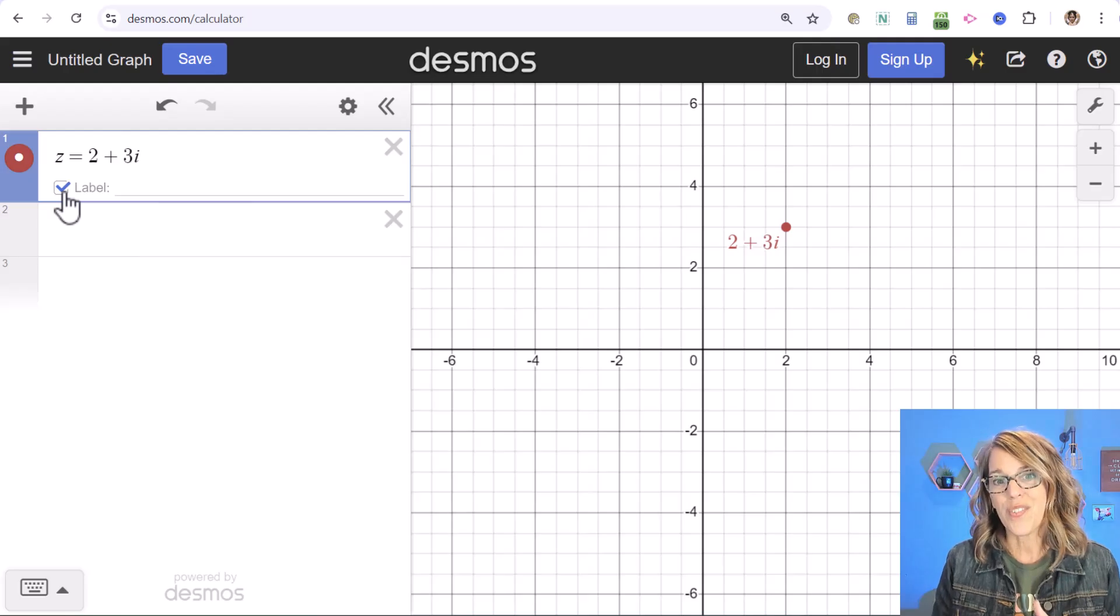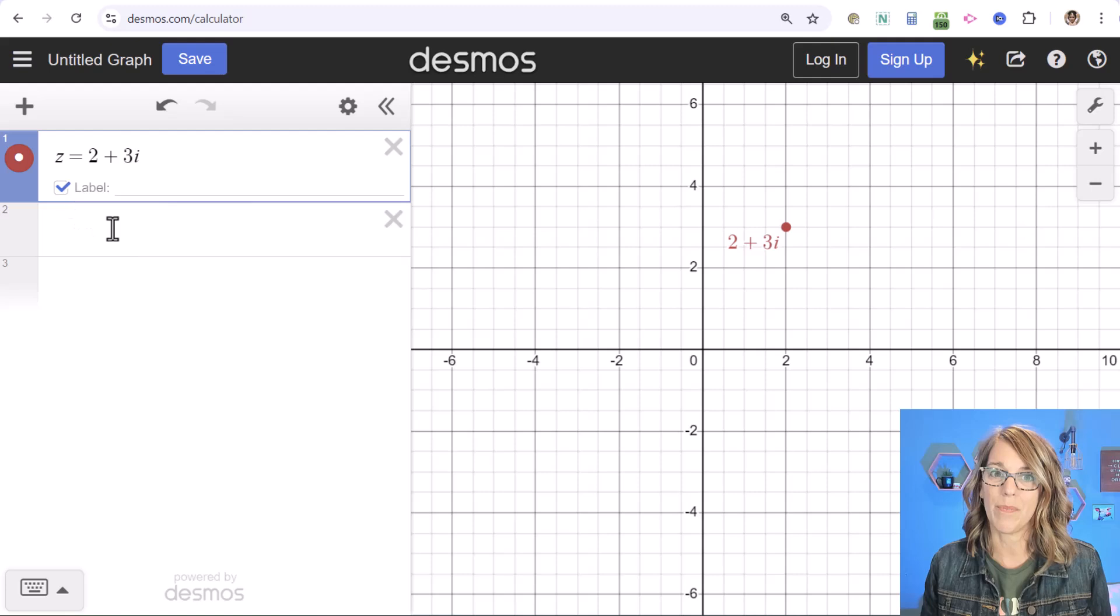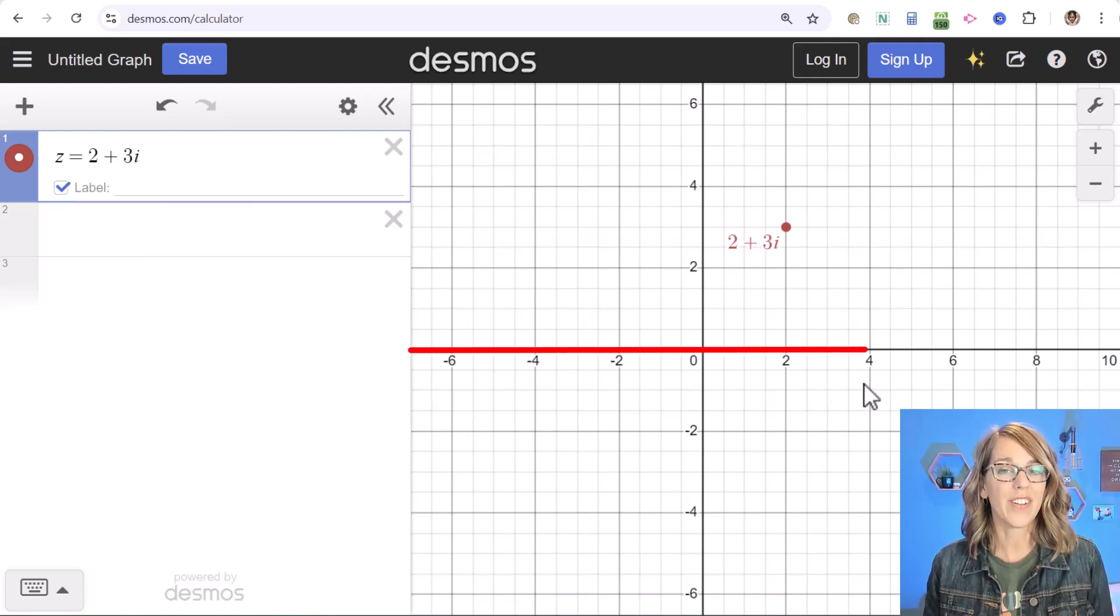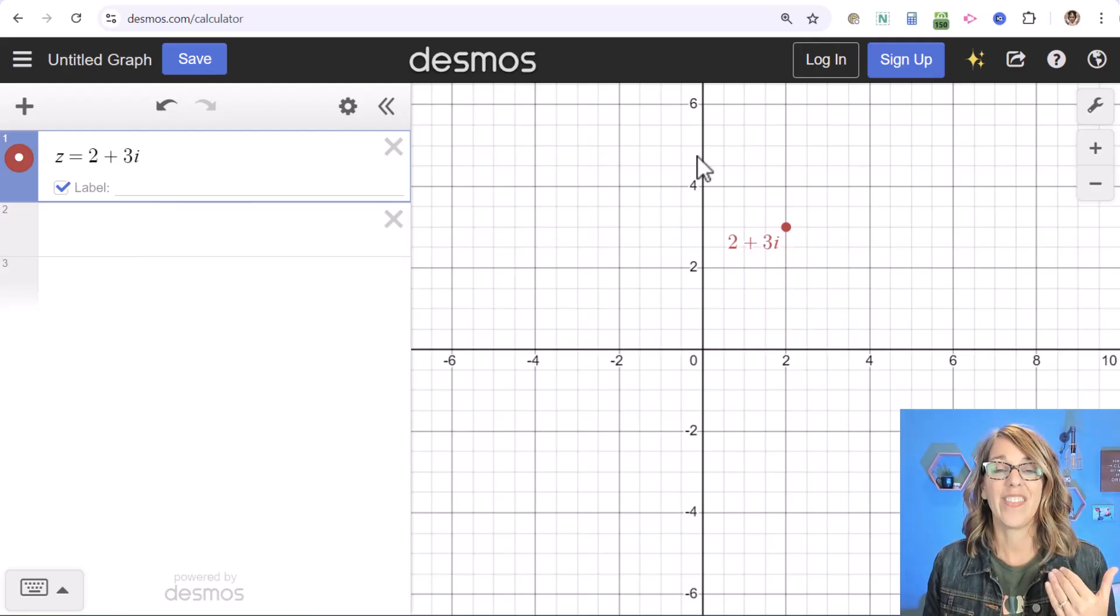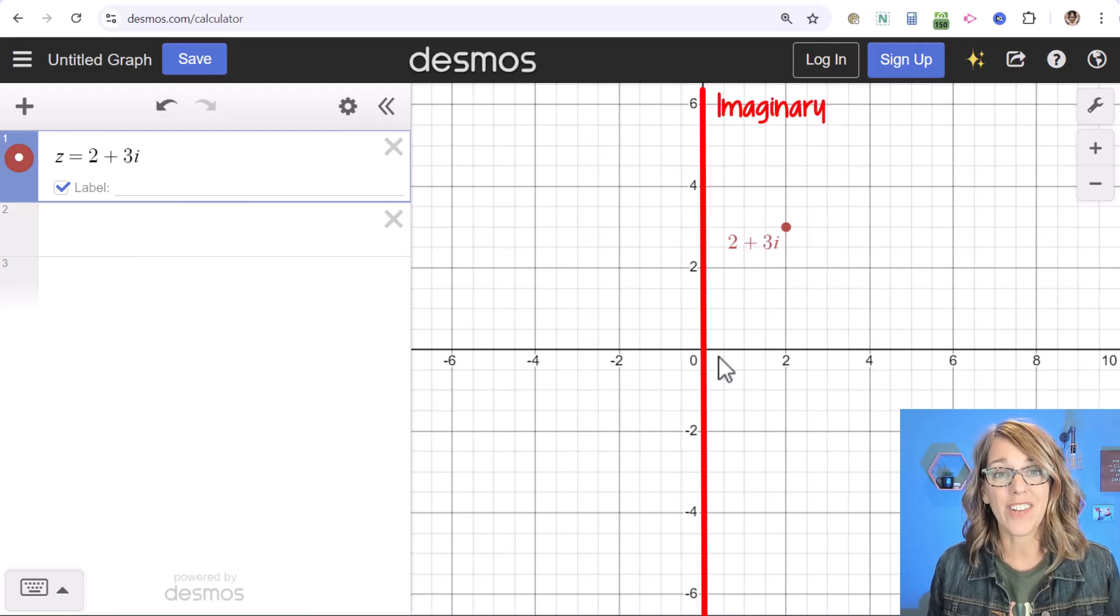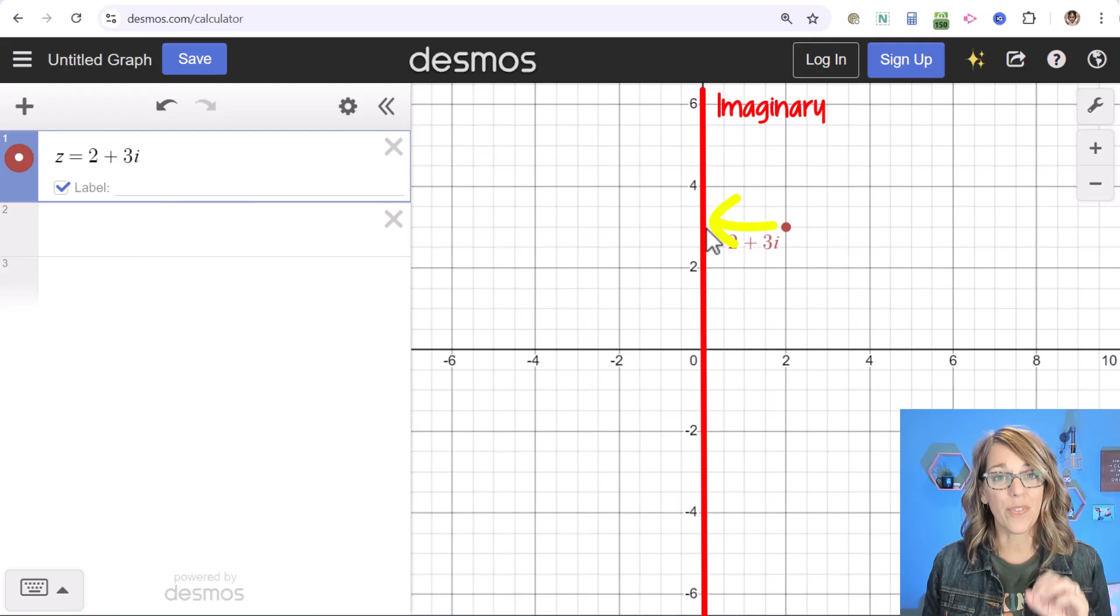Because I want to show you that what I'm looking at is this number graphed in the complex plane. My horizontal axis is now the real axis, so my point lines up with 2 which is the real part. And the vertical axis is my imaginary axis. Here we've got 3i, so it's lined up with 3 on that vertical axis.